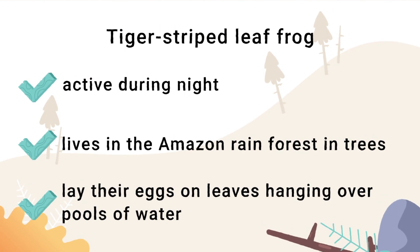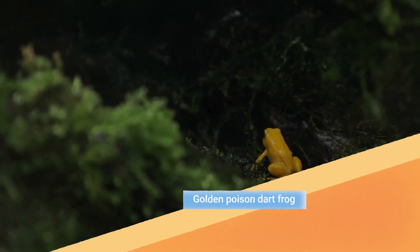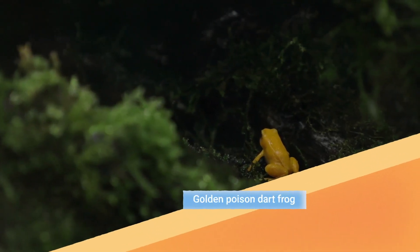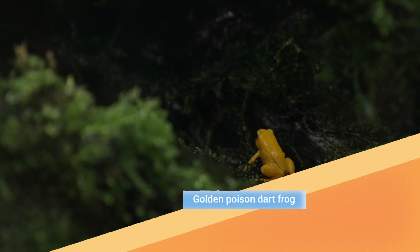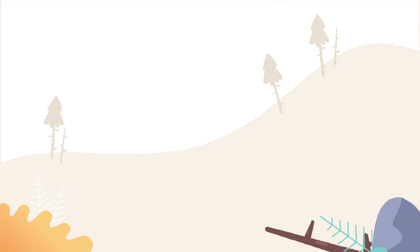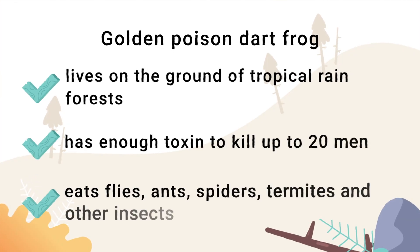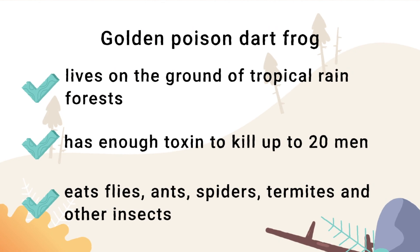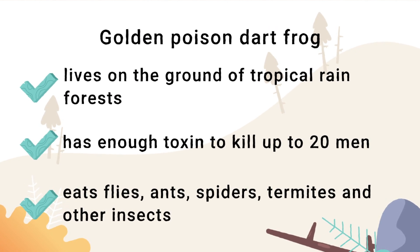This little fellow is a golden poison dart frog. It is the most poisonous frog — it could kill up to 20 men. It eats flies, ants, spiders, and other insects.